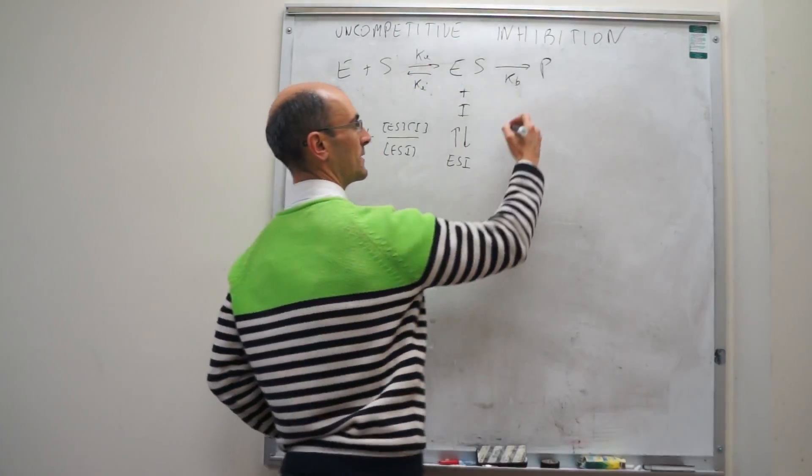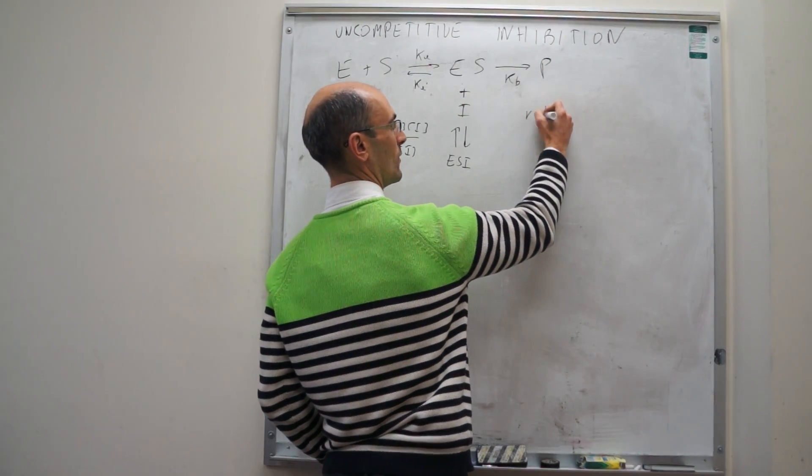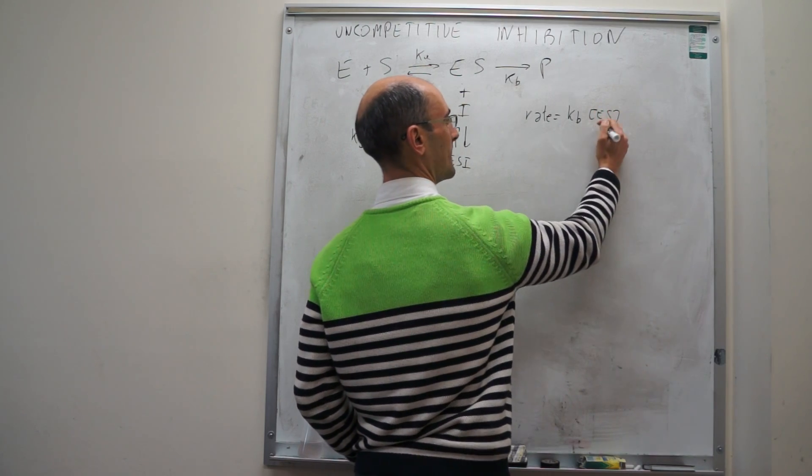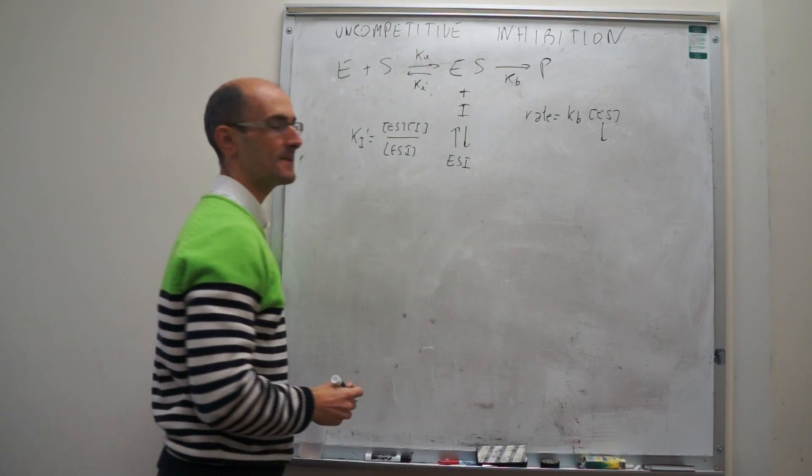To the rate law, the setup is simply going to be, much as before, the rate is going to be equal to k2 times ES. And the steps to obtain this ES is going to be exactly the same.